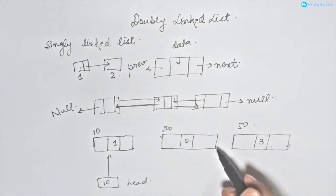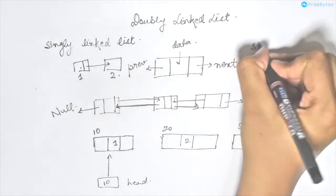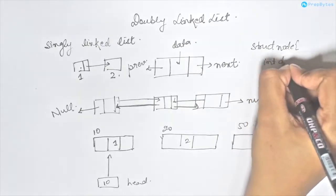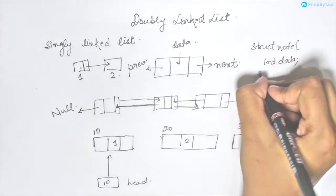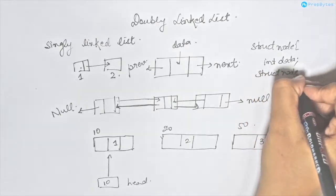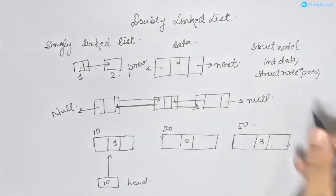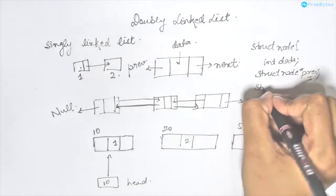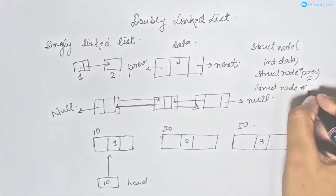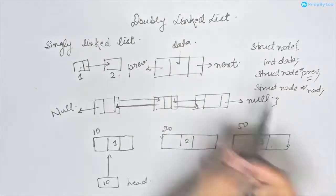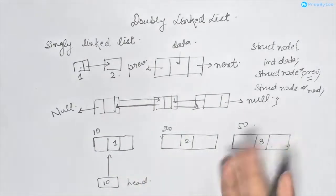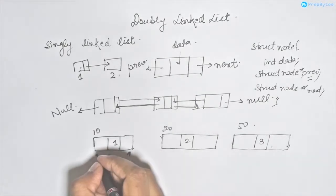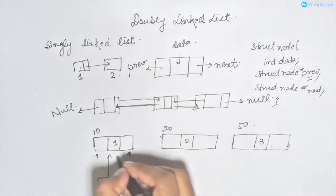So the structure of a doubly linked list looks like this. It will have struct node with three elements: first will be int data for storing integer data, second will be struct node pointer prev, which points to and stores the address of the previous node, and then we have struct node pointer next, which stores the address of the next node. So this is the next pointer and this is the previous pointer.